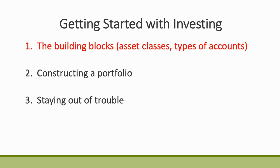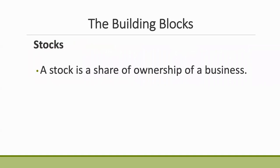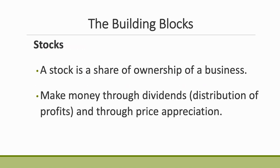Starting at the beginning with the building blocks: there are two primary asset classes. The first is stocks. With a stock, it's just a share of ownership in a business. The way you make money is that hopefully the business earns a profit, and in many cases they will distribute that profit to shareholders — that's called a dividend payment. So you're just getting money from your shares.